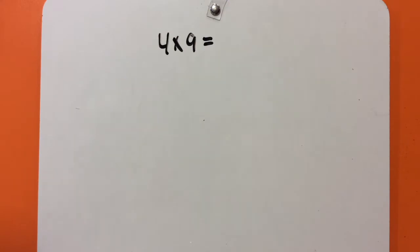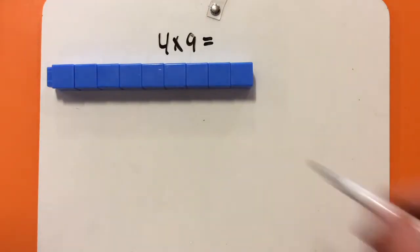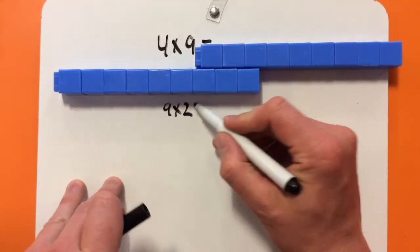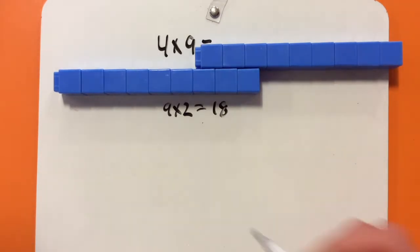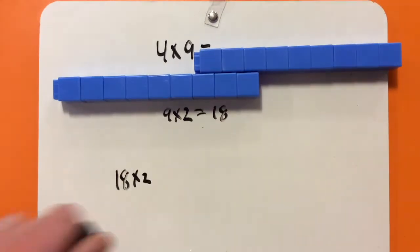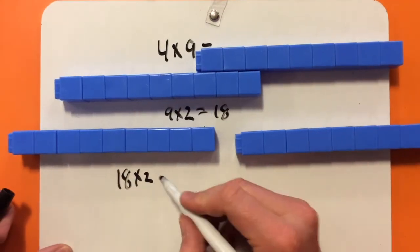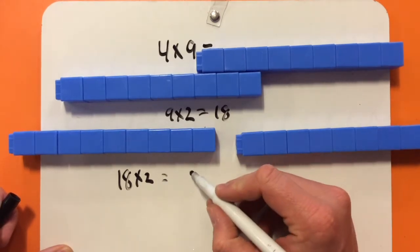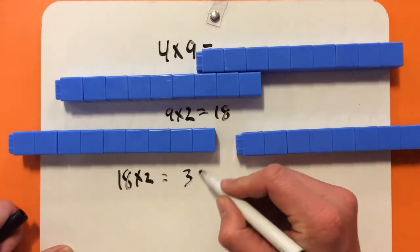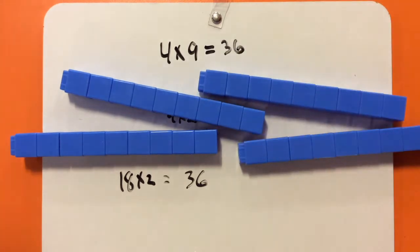In this problem, we have 4 times 9. So, let's start with our 9 and double that. 9 times 2 equals 18. So, then we're going to do double that again — 18 times 2. Now, this will be a bit trickier, but we know double 10 is 20 and double 8 is 16. So, we know that double 18 is 36. So, 4 times 9 equals 36.